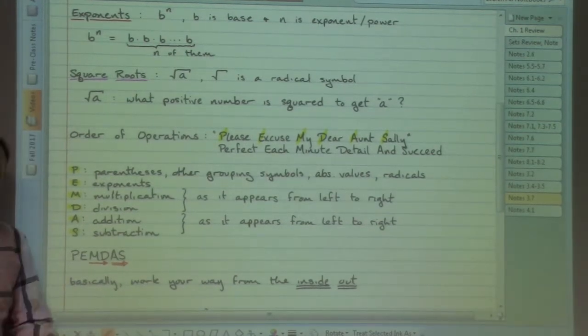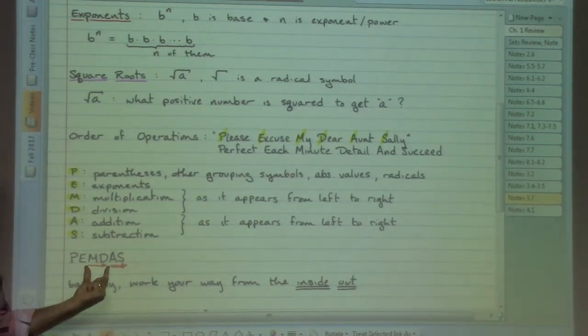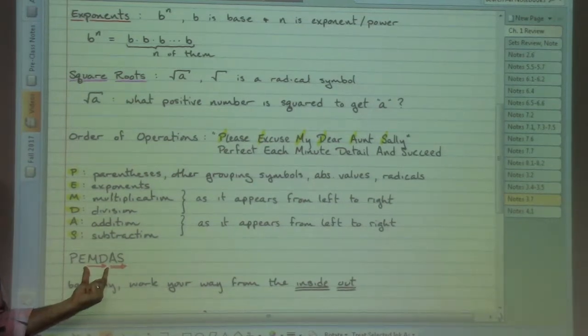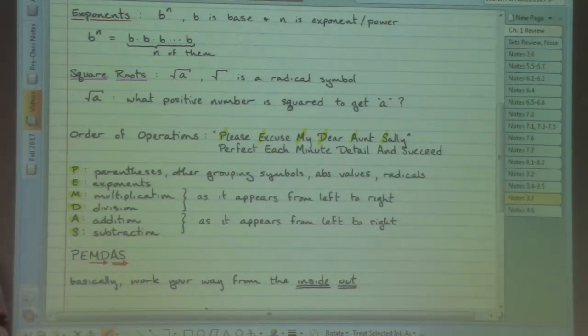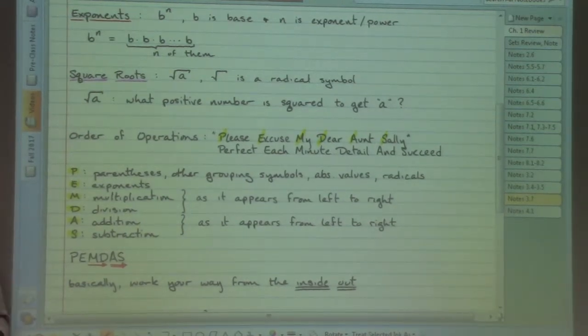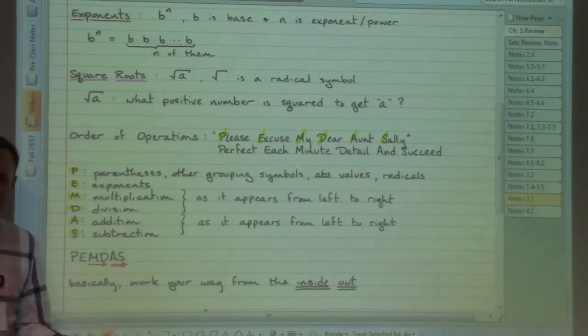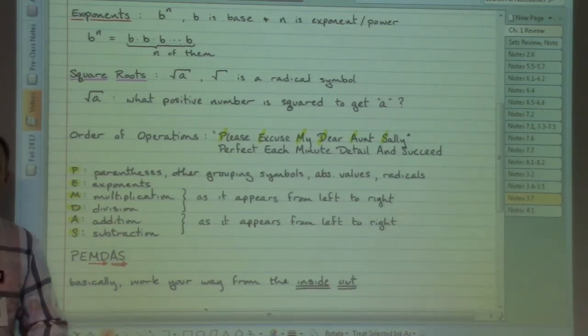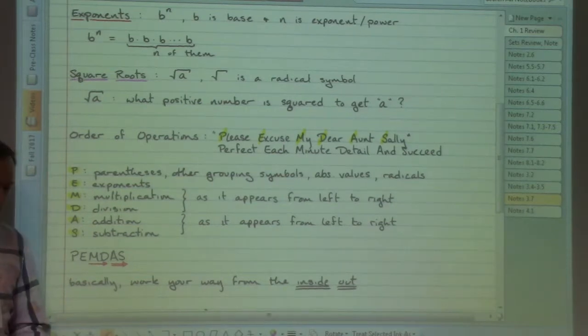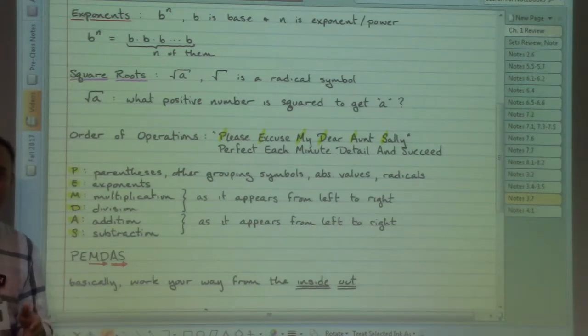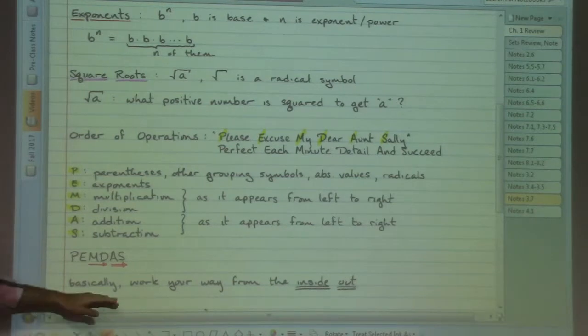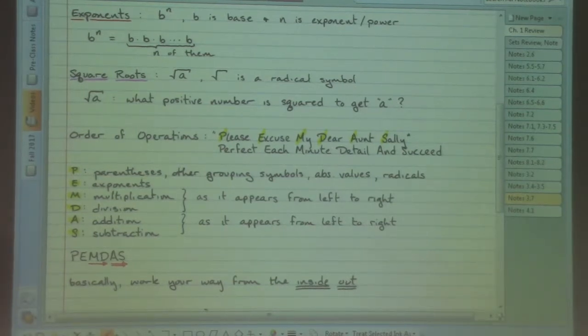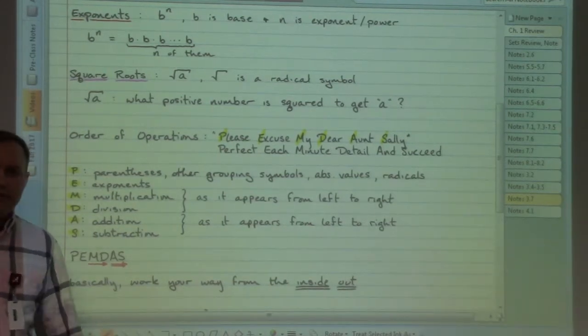So what we can do to try to remember that is put an arrow underneath the M and the D, and then put another arrow under the A and the S to remind ourselves that when we're ready to handle multiplying and dividing, if there is nothing else that controls how we work through the problem, then we would work through either the multiplying or the dividing, whichever comes up as we read from left to right. Another way of kind of getting the gist of this across, work your way from the inside out.